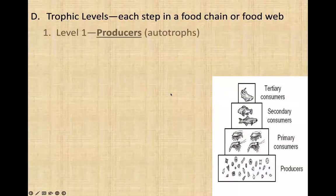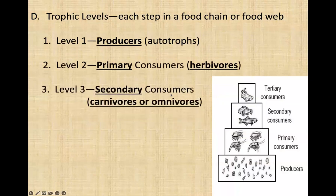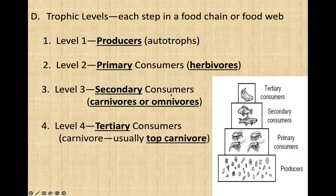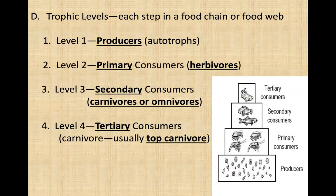The term trophic levels refers to how we show the directional flow of energy through ecosystems — we can represent it in a pyramid with different trophic levels. Each step within a food chain or food web is referred to as a trophic level. At the bottom of this pyramid would be our producers, which are autotrophic organisms that use sunlight energy to make food for themselves. This is going to be our highest level of energy starting out.